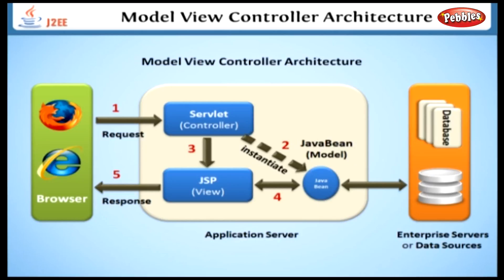Here you are seeing the diagrammatic representation of the interaction between the model, view, and controller components of the MVC pattern. When a request arrives from the browser, the servlet, i.e., the controller, initiates a Java Bean and activates the corresponding JSP to process the request, and finally sends a response to the browser.